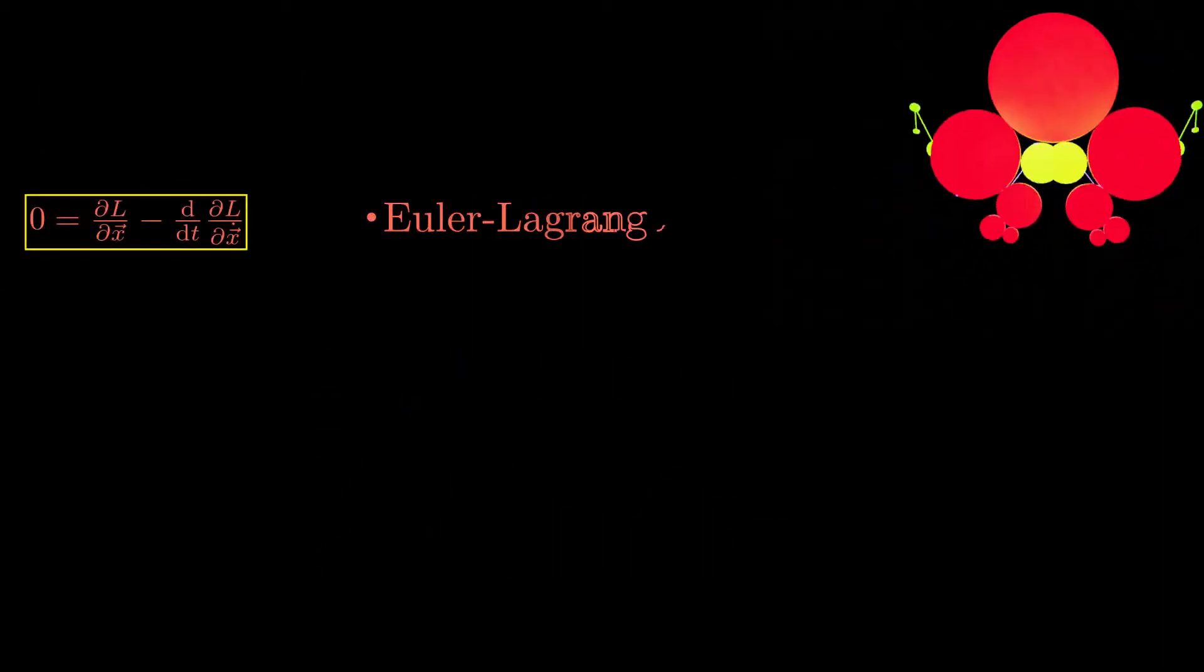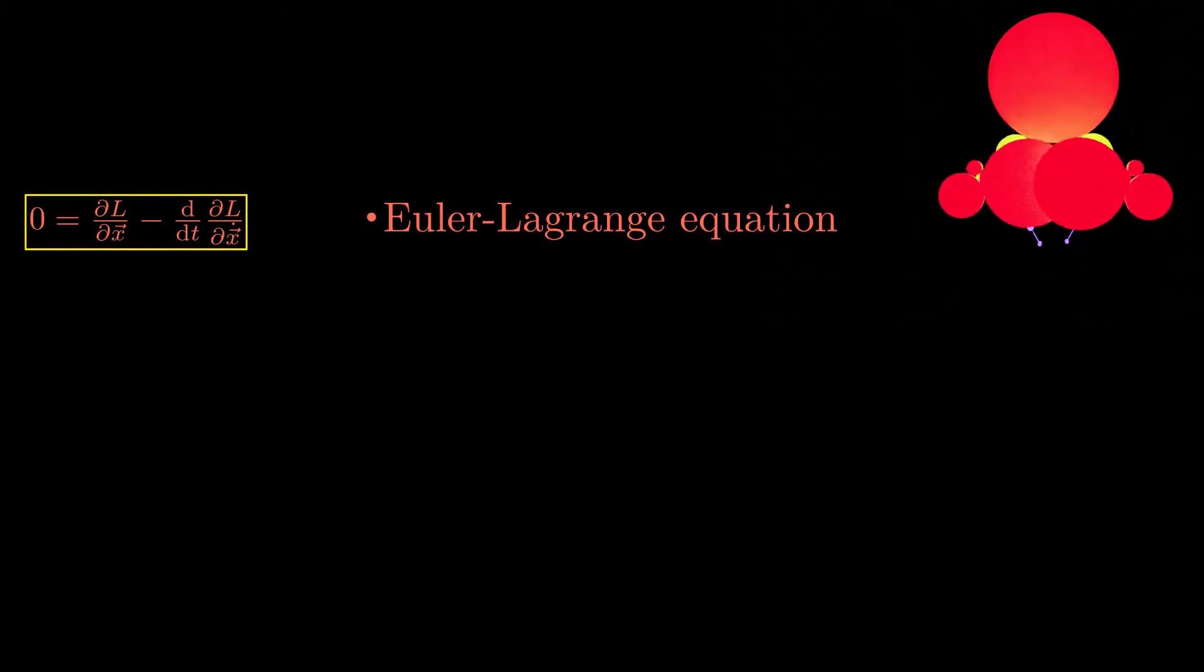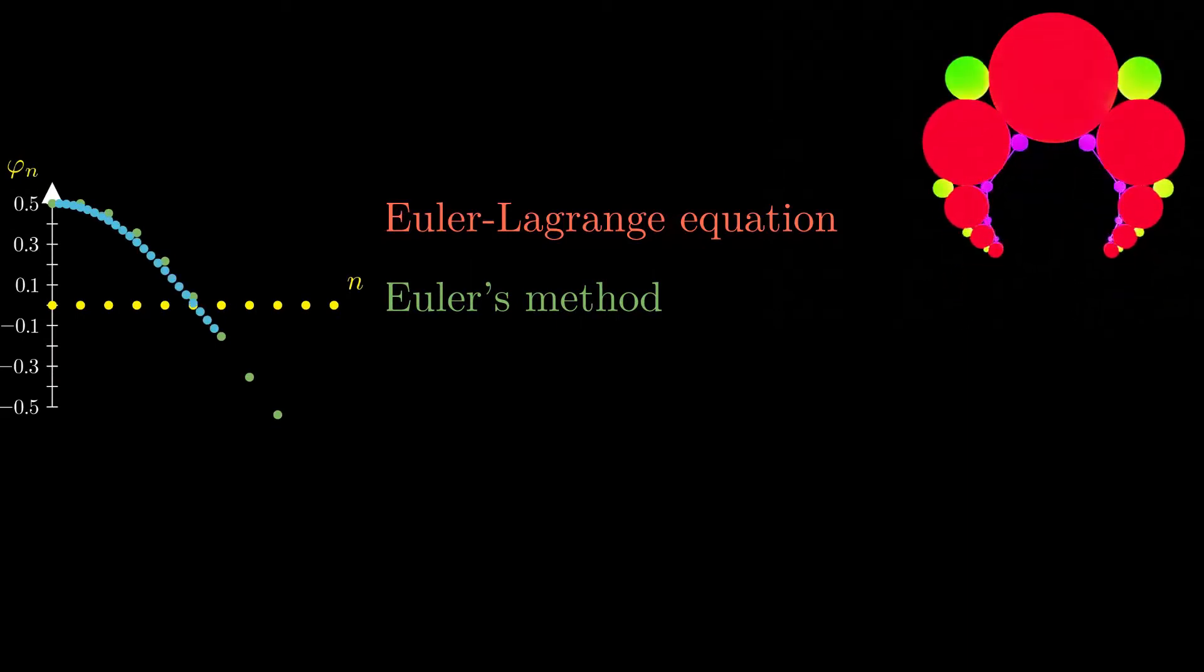In the first part, the Euler-Lagrange equations are derived, which are a direct consequence of the principle of least action. In the second part, a simple numerical method is described that was used for simulating the motion of the pendulum and the double pendulum.